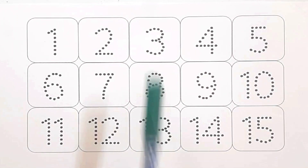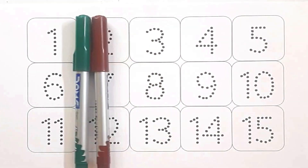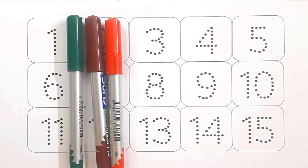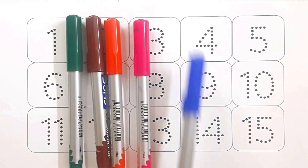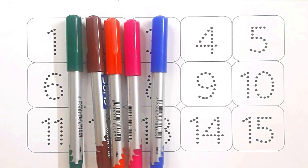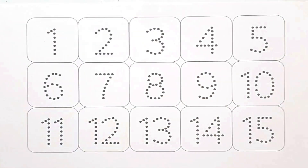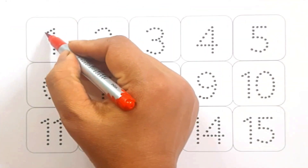Color name. Green color, brown color, red color, purple color, blue color, red color.